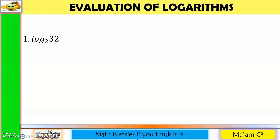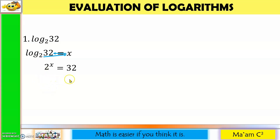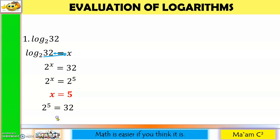Let us evaluate logarithms. Number one: since we want to know the value, we equate this to x, then convert the logarithmic form into exponential form. So we have 2 raised to x equals 32. We make the bases the same by expressing 32 as 2 to the fifth power. Now that the bases are the same, we equate the exponents: x equals 5. Checking: 2 raised to 5 is 32. Correct.